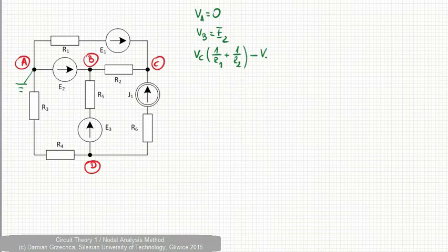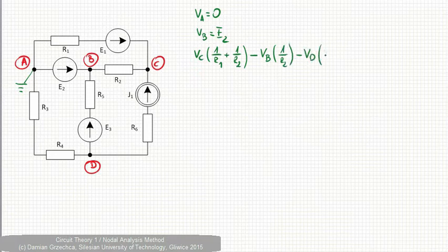We do not take into account the branches with a current source on the left hand side of the equation. Subtract the potential of all other nodes VB times the conductance between node C and VB. It is 1 over R2 minus VD times zero because it is 1 over infinity.